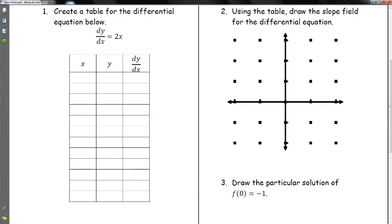And I'm going to marry that with number 2: using a table, draw the slope field for the differential equation. If you notice on your slope field, there's a bunch of dots, and so these are all coordinates, and that's what I'm going to be using for my table. For example, if I talk about this coordinate right here, that's the coordinate x = -2, y = -2.